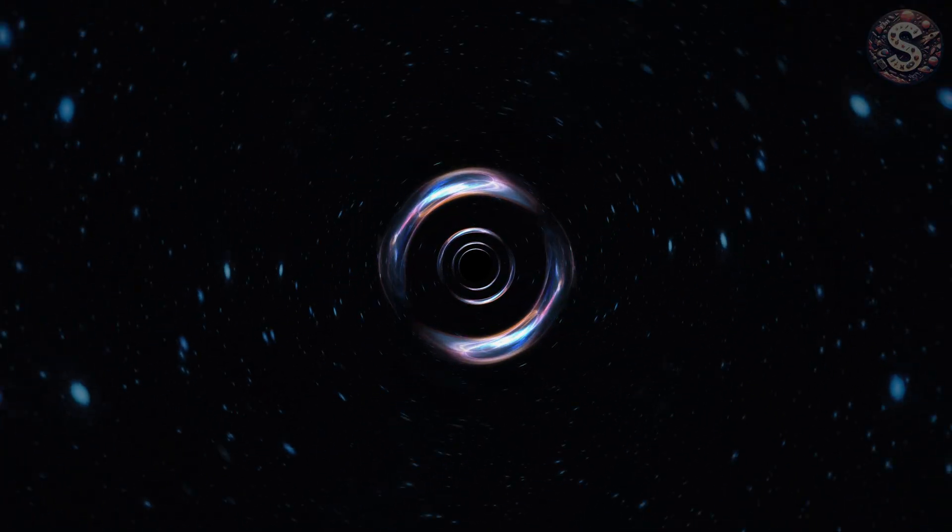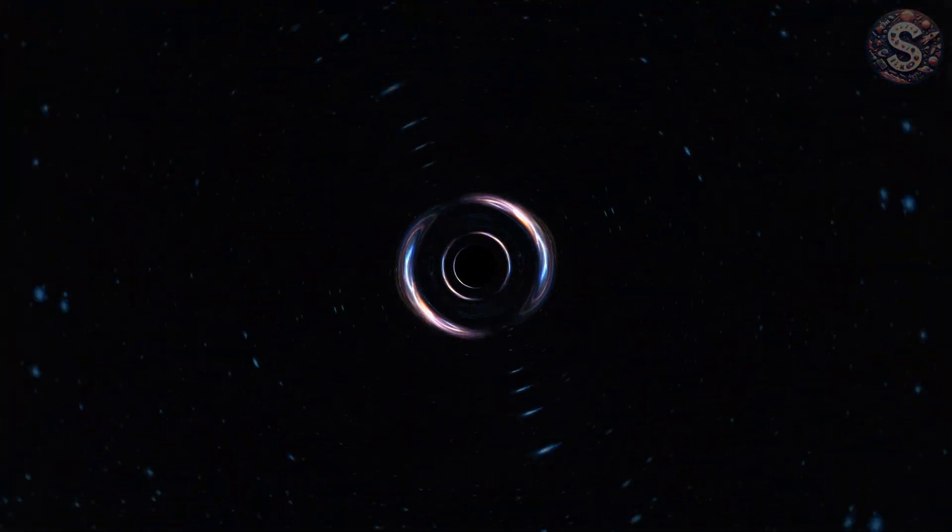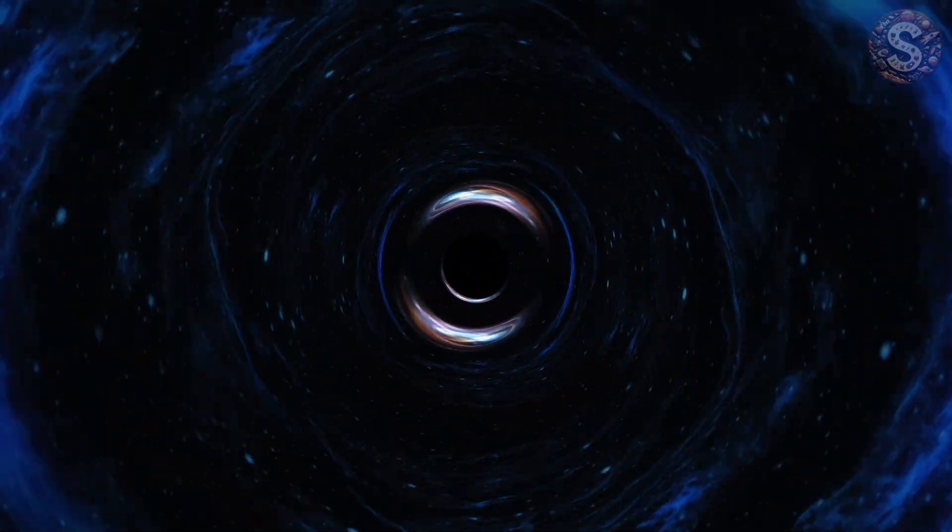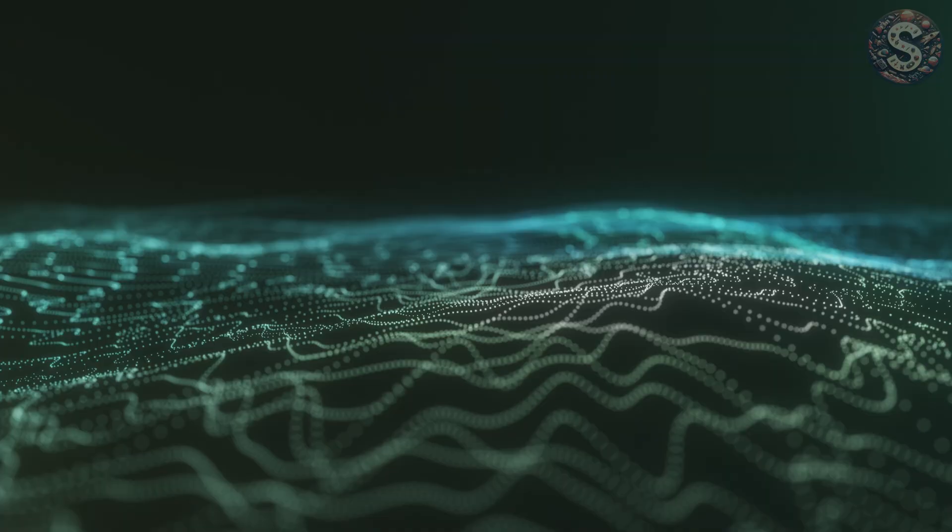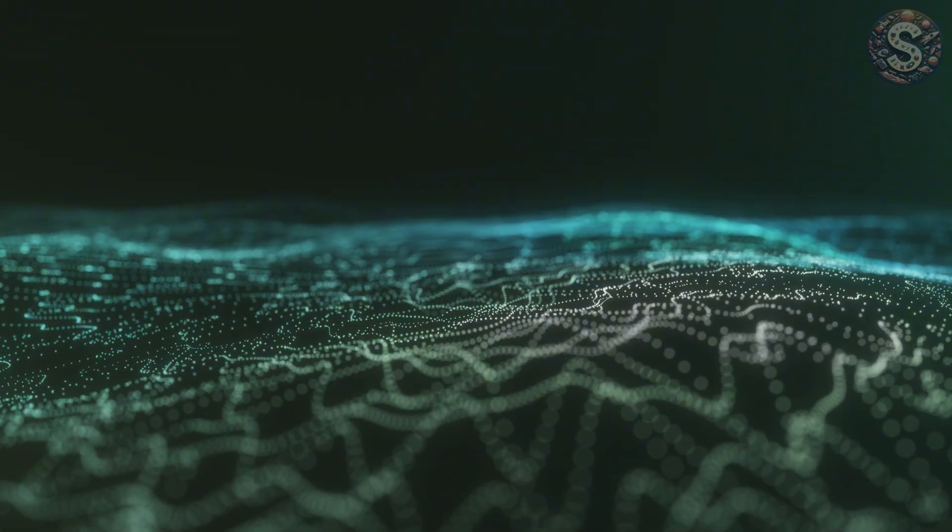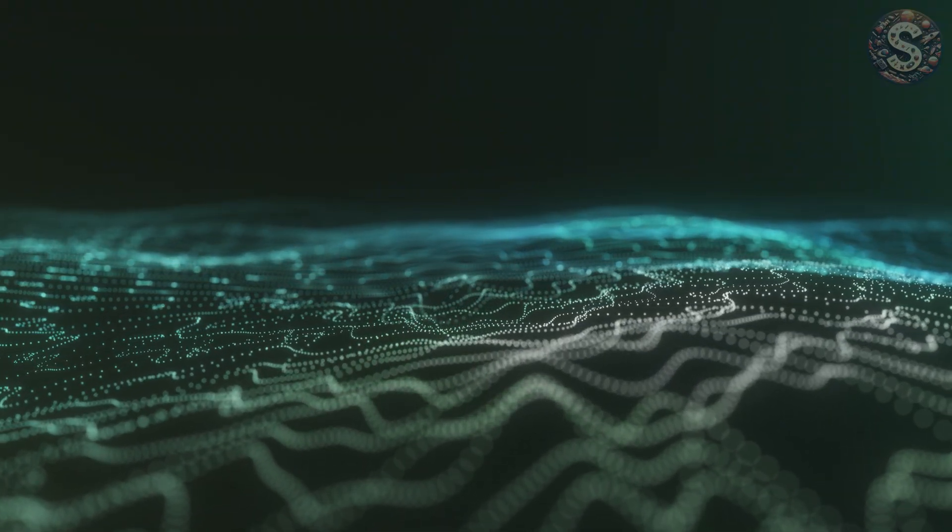One of the biggest hints comes from attempts to merge quantum mechanics with general relativity. Einstein gave us a universe where spacetime bends and warps, but quantum physics describes particles popping in and out of existence. These two frameworks don't play nicely together, and when physicists try to write equations that combine them, something strange happens. Time disappears.